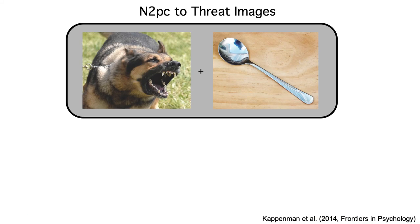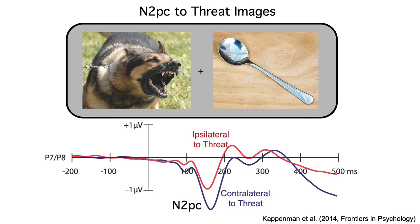Here's an example from a study that Emily did several years ago. Subjects saw a threat image paired with a neutral image. The stimuli were task irrelevant and the threat image was equally likely to be on the left side and on the right side. Many theories predict that covert attention will be automatically attracted to the threat image, but most behavioral studies using indirect measures of covert attention don't actually see any capture of attention by the threat image. But we were able to directly measure the allocation of attention using the N2PC component. Emily found that the threat image elicited a robust N2PC — the voltage was more negative contralateral to the threat than ipsilateral to the threat.